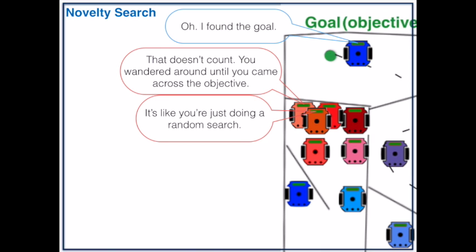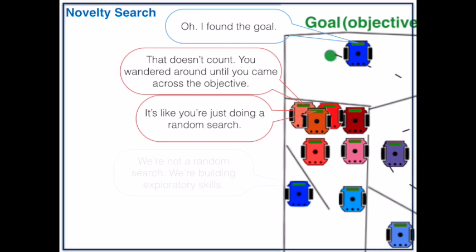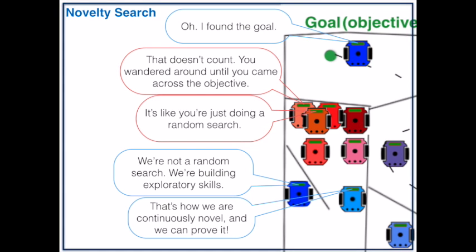While this is a valid concern, supporters of novelty search disagree. We're not random search. We're building exploratory skills. That's how we are continuously novel and we can prove it.